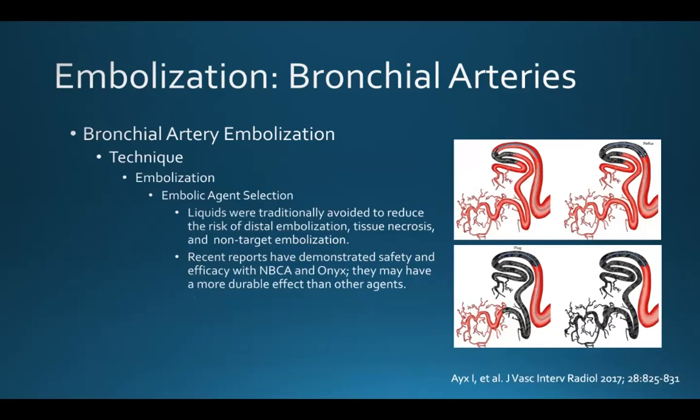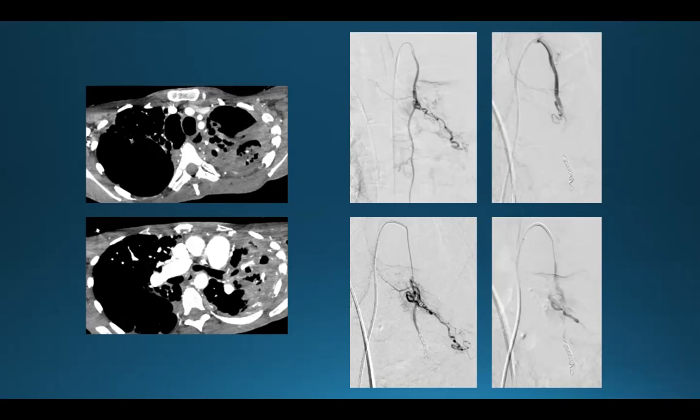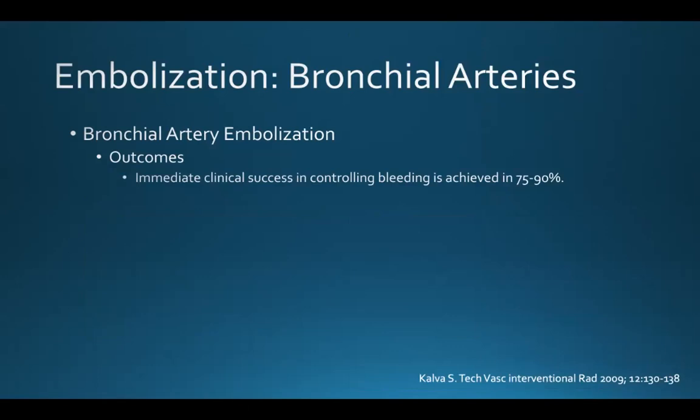Liquid agents were traditionally avoided to reduce the risk of distal embolization, tissue necrosis, and non-target embolization, but recent reports have demonstrated safety and efficacy with both glue and Onyx — and in fact, they may have a more durable effect than other agents. Coils are usually avoided because they create a more proximal occlusion, which can lead to rapid collateral development and recurrent bleeding, and a proximal occlusion can preclude repeat treatment if hemoptysis recurs. They can, however, be used to protect a normal vascular territory from embolization, especially when embolizing non-bronchial systemic collaterals. In this patient with the arterial supply coming from the internal mammary artery, we embolized the distal aspect of the internal mammary with coils first, then were able to safely embolize the non-bronchial systemic collateral supplying the abnormal parenchyma using particles from a proximal position.